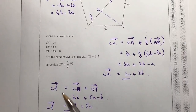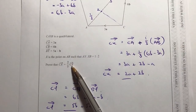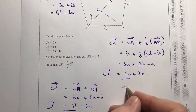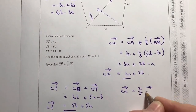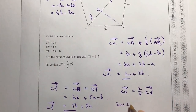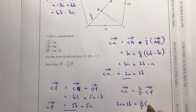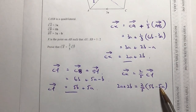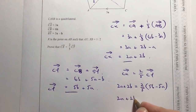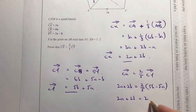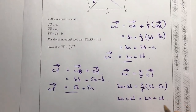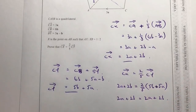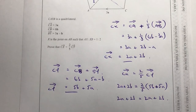Now we've got both vectors. We want to show that CX equals two-fifths of CY. CX is 2a plus 2b, and two-fifths of CY is two-fifths of (5a plus 5b). Multiplying out, the fives cancel, giving 2a plus 2b — which is exactly equal to CX. So we've proved that vector CX equals two-fifths of vector CY.